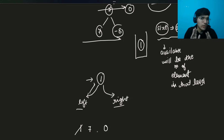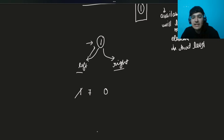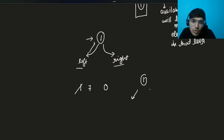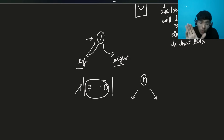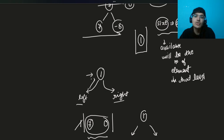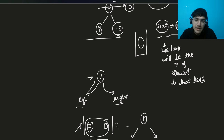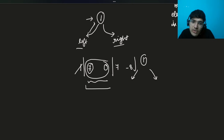We pushed two elements into the queue. Again the queue size becomes the loop count for the next iteration — we loop two times for level two. We pop 7 and push its children: 7 and minus 8. For node 0 there are no children, so nothing gets pushed. The loop ends for level two.